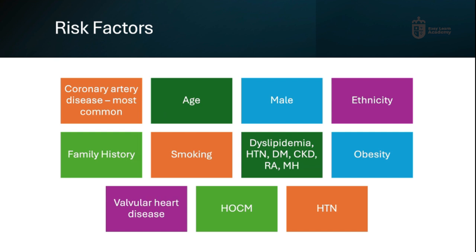These are some of the risk factors that could cause narrowing of the blood vessels supplying the heart. We have coronary artery disease as the most common cause. We have age — the older you are, the more likely your vessels are going to be narrowed. Males tend to have a higher likelihood of narrowed vessels than females. Ethnicity — usually Asians are most at risk. Family history of angina also increases your likelihood. Smoking is also one of the major risk factors.